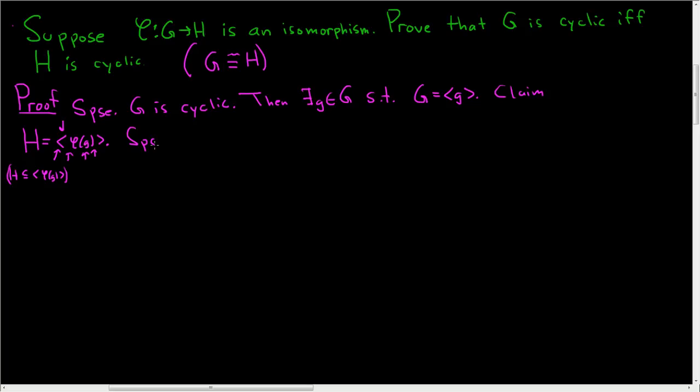So that's all we have to show here. Suppose that we have some little h in capital H, and we somehow need to involve G. So we'll use the fact that phi is onto. So since phi is onto, there exists some x in capital G such that phi of x is equal to H. Okay, phi of x is equal to H.